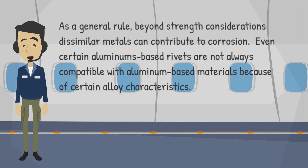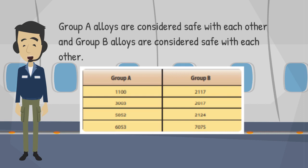As a general rule, beyond strength considerations, dissimilar metals can contribute to corrosion. Even certain aluminum-based rivets are not always compatible with aluminum-based materials because of certain alloy characteristics. Group A alloys are considered safe with each other, and Group B alloys are considered safe with each other.